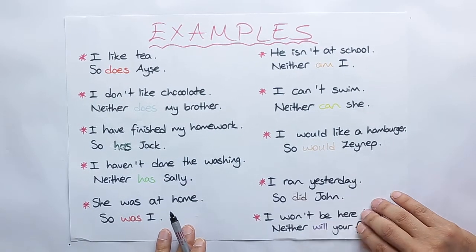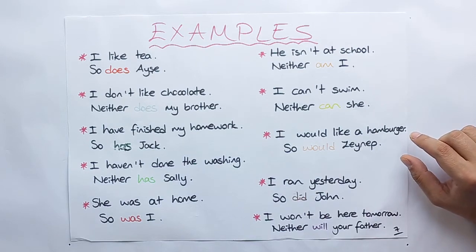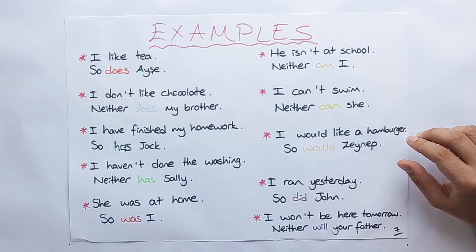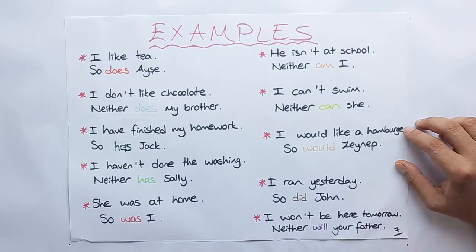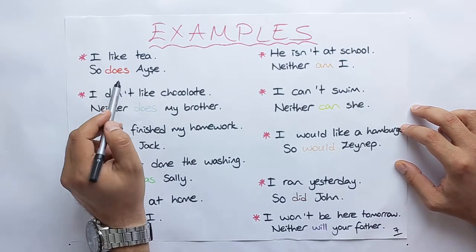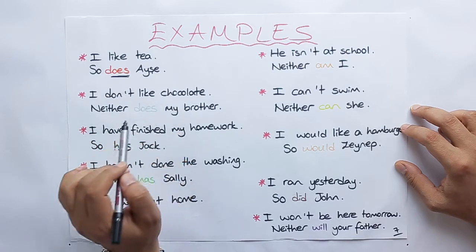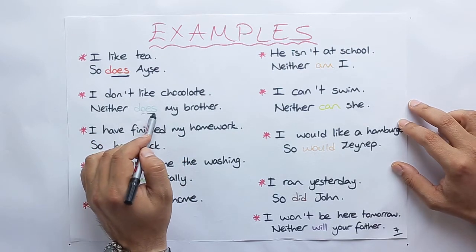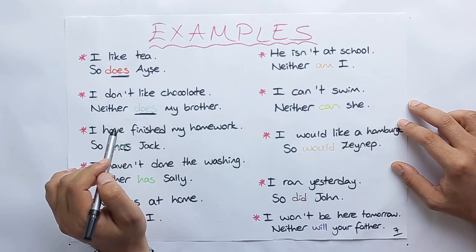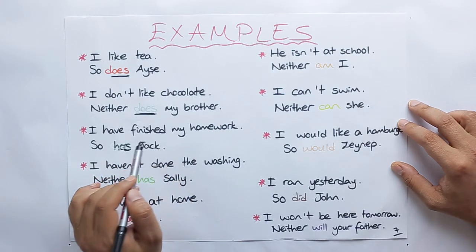And for the last page, we have some examples. And we will also read all these examples now. I like tea, so does she. I don't like chocolate, neither does my brother. I have finished my homework, so has Jack.